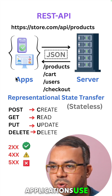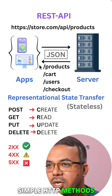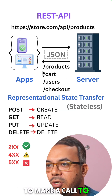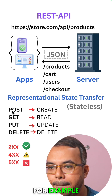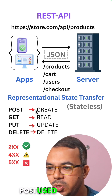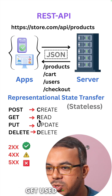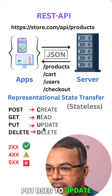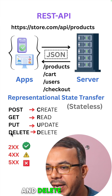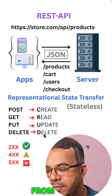Applications use simple HTTP methods to make a call to these endpoints. For example, POST is used to create, GET is used to read, PUT is used to update, and DELETE is used to delete the resource from the server.